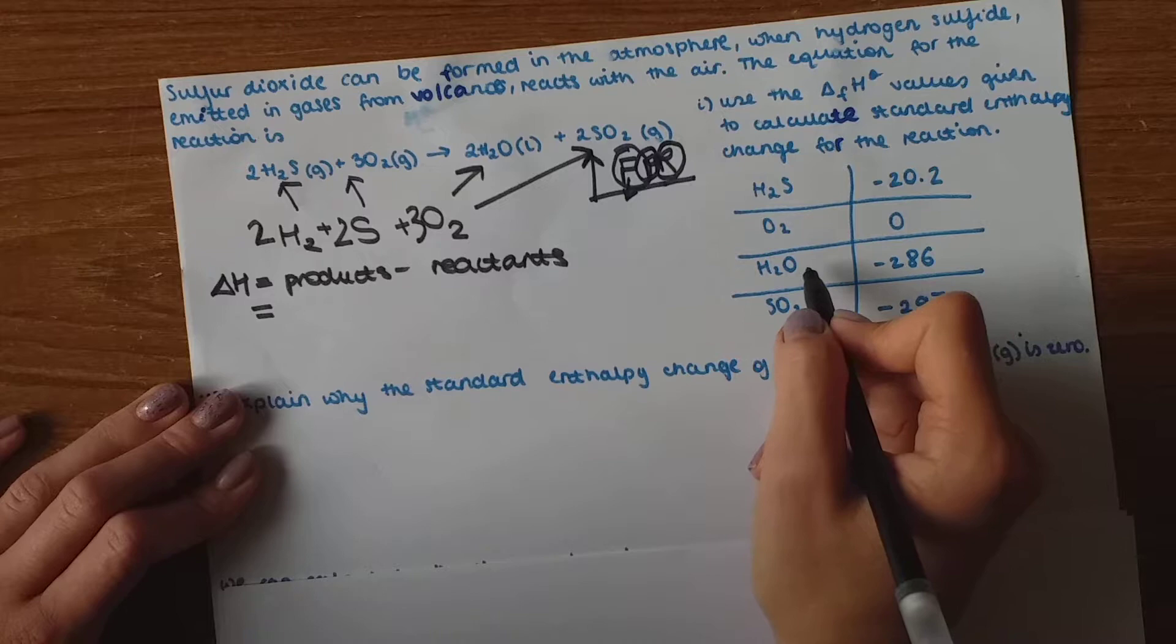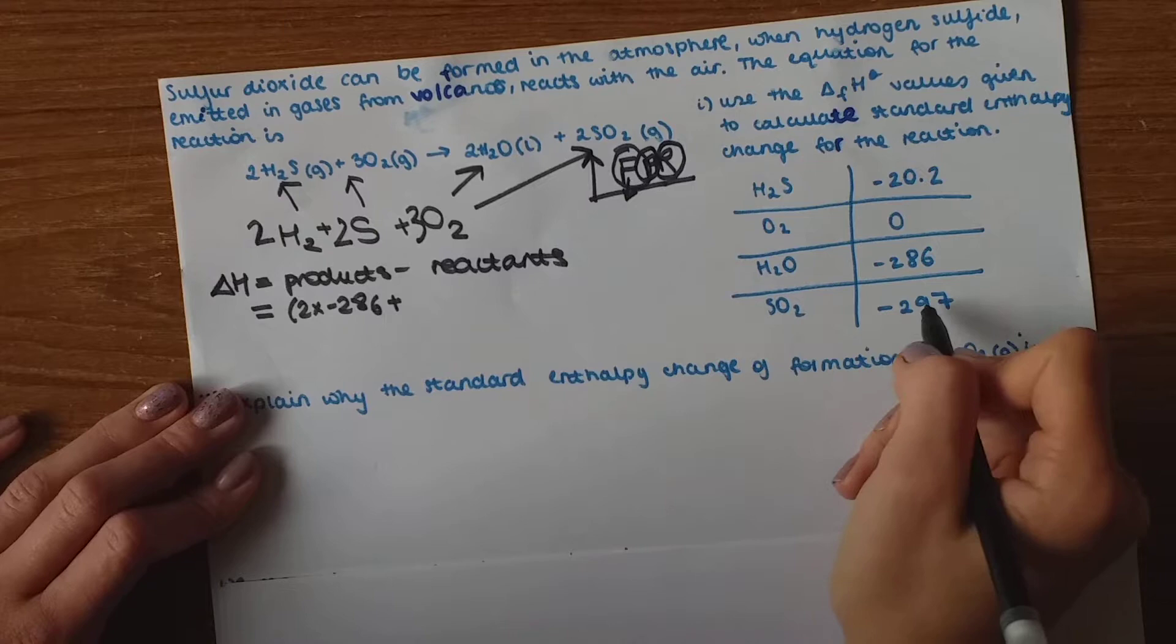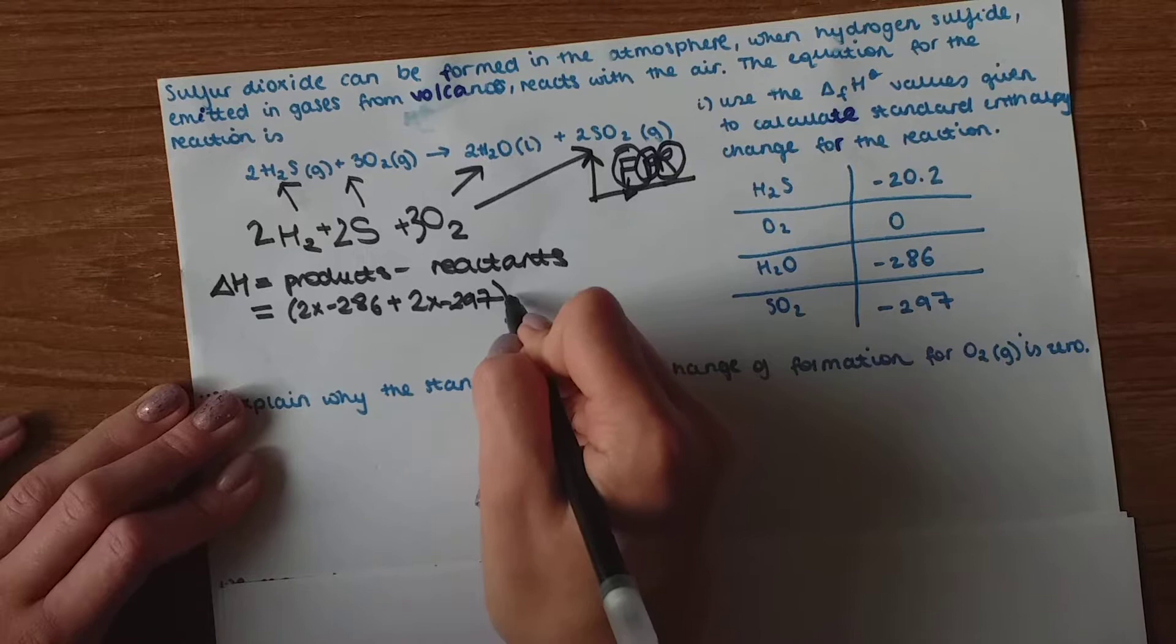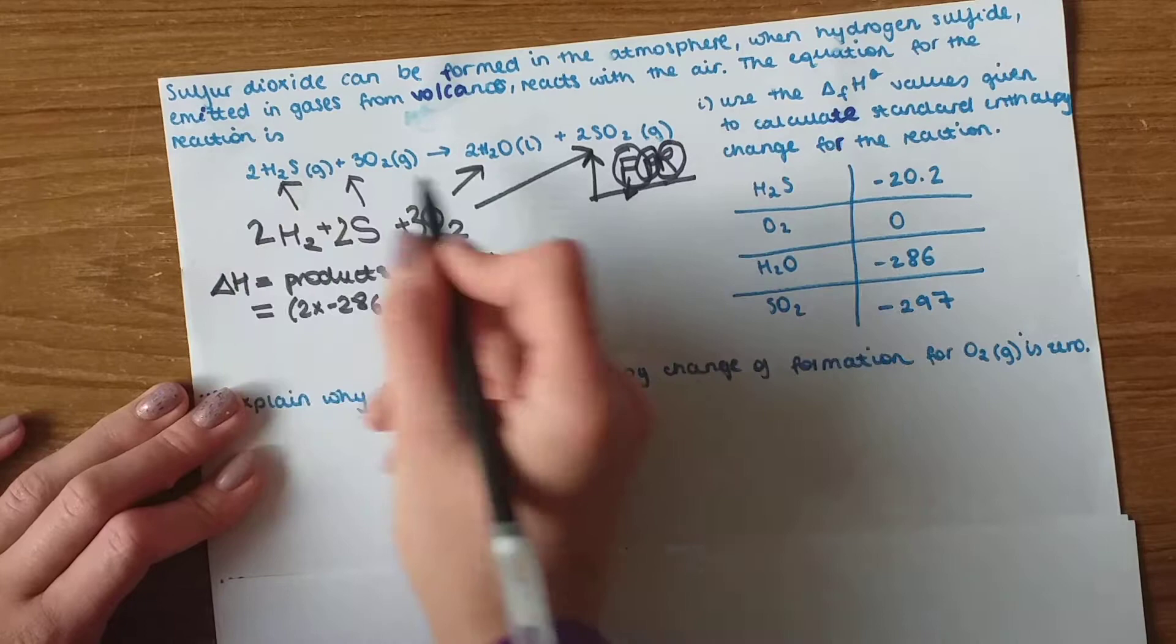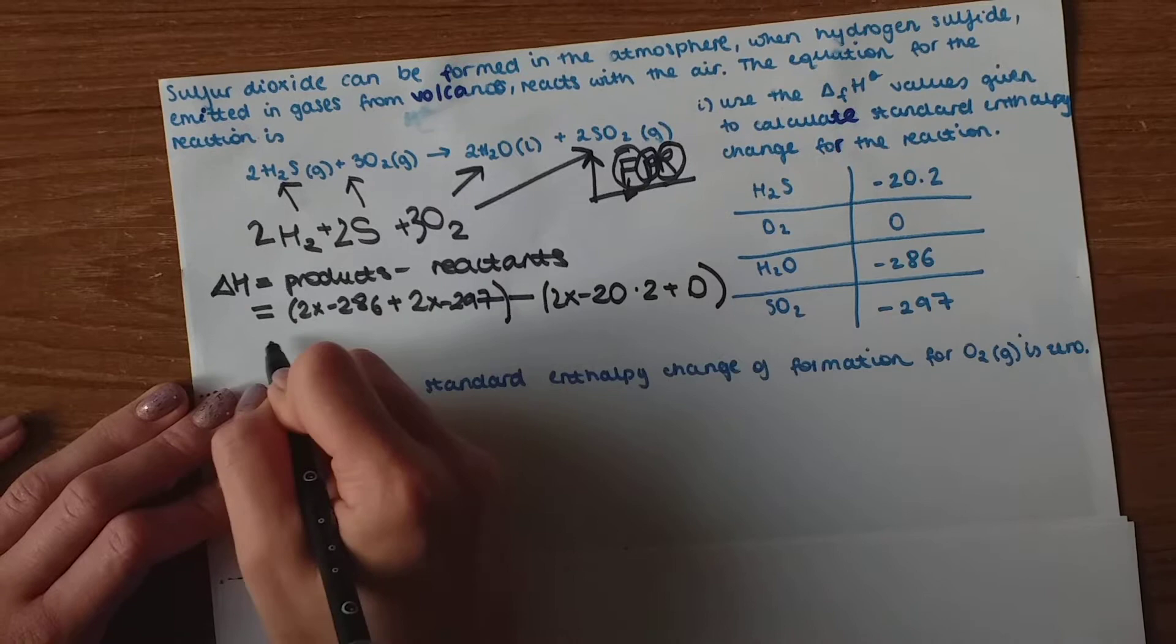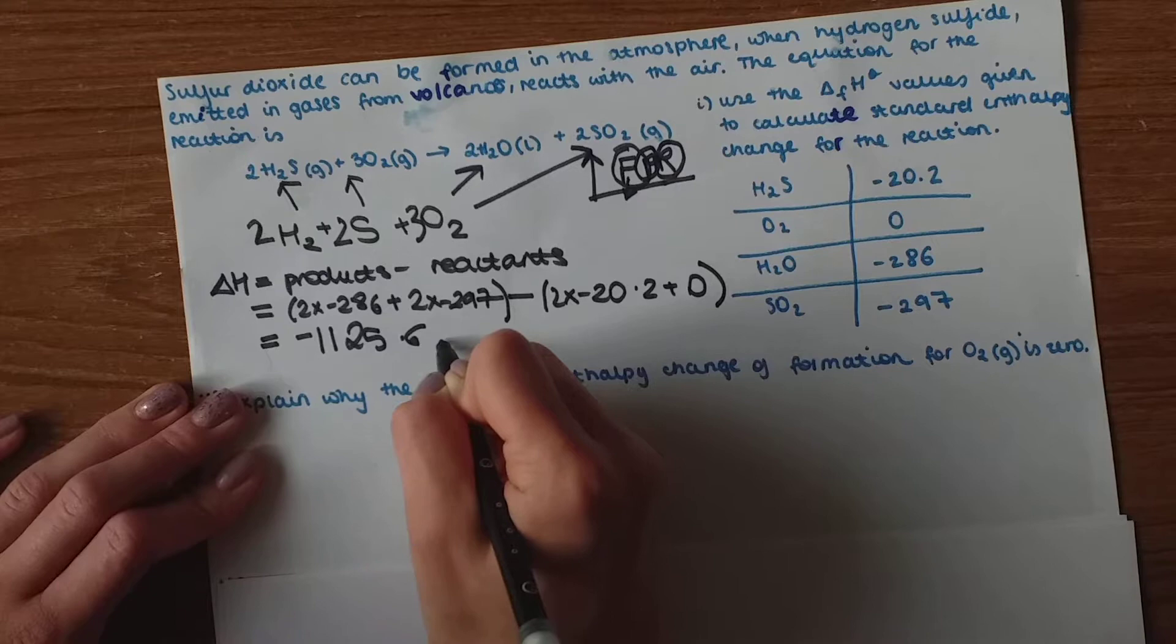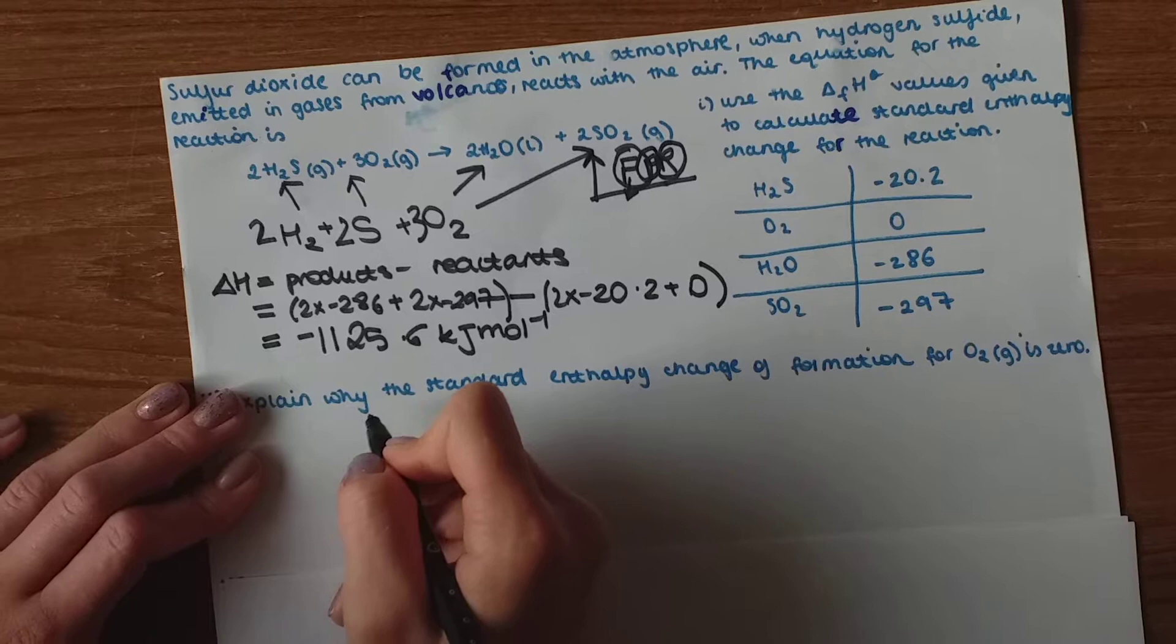We have all the values right here so we just put them in. Products, we've got two hydrogens plus oxygen is two waters so two times minus 286 plus we've got two SO2 so it's two times minus 297. That's all the products and now we've got to take away the reactants which is two H2S plus two times minus 20.2 and oxygen is in its standard state so it's zero. So after we add all of this together and take away all of this we get minus 1125.6 and the unit is kilojoules mole minus one.